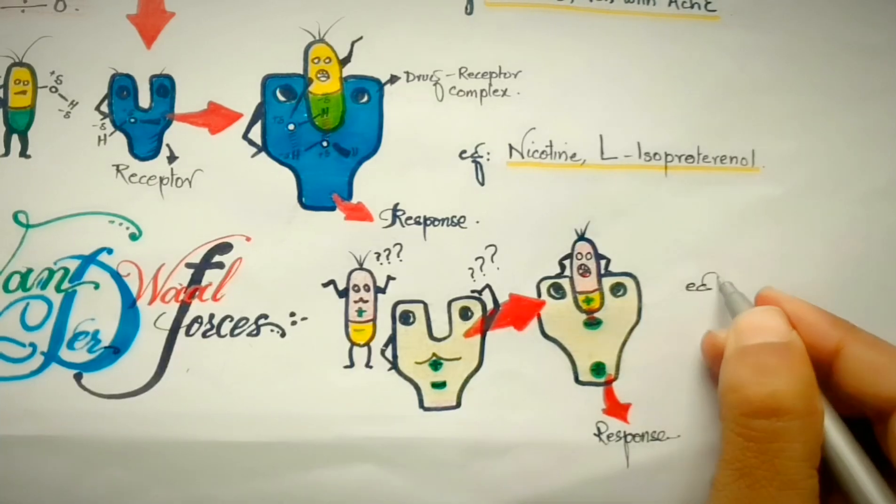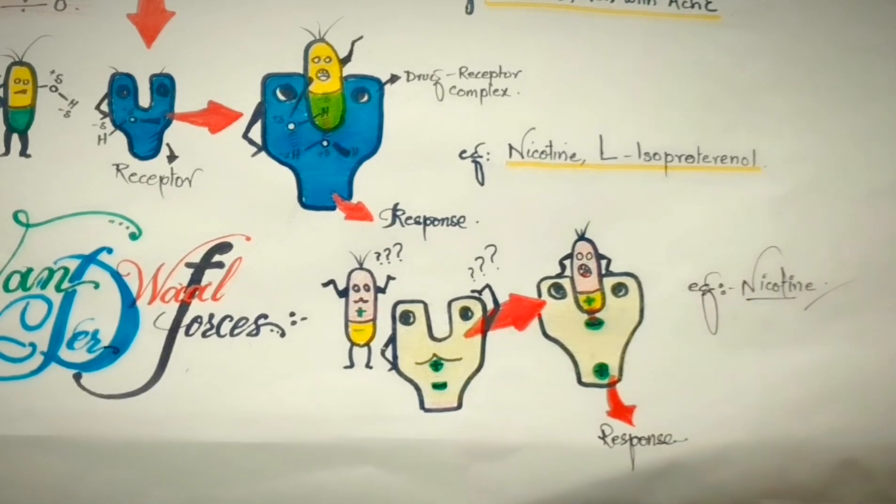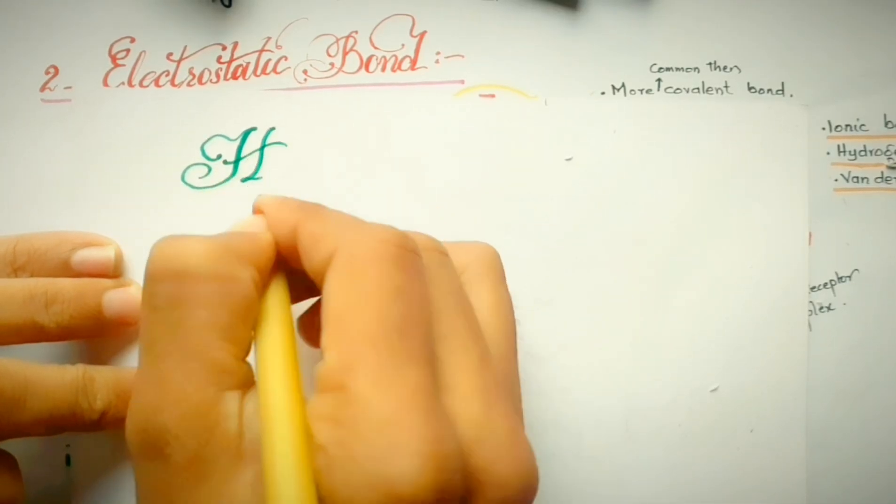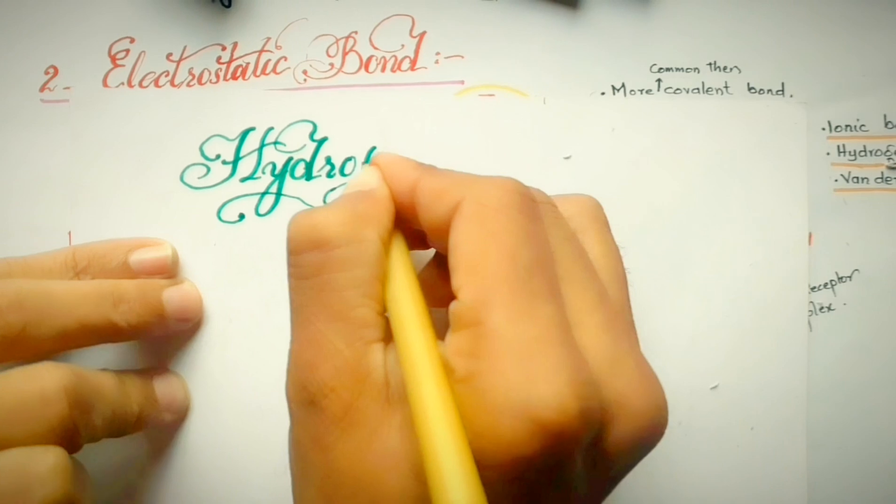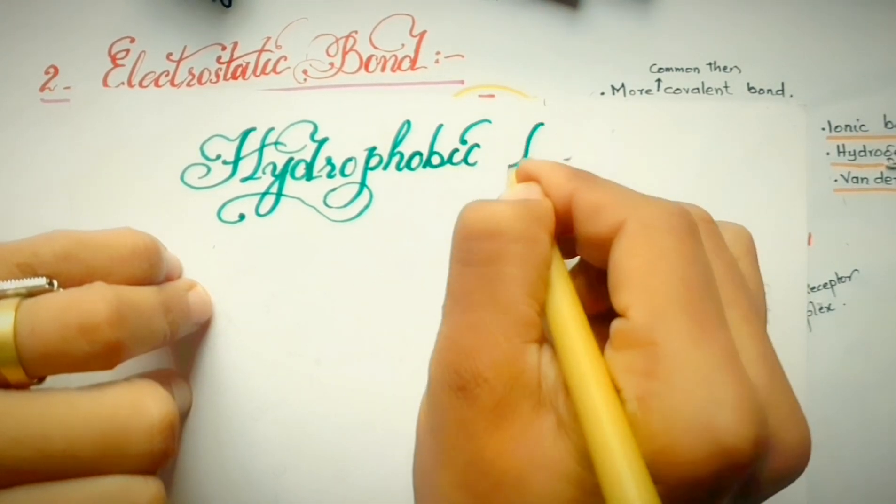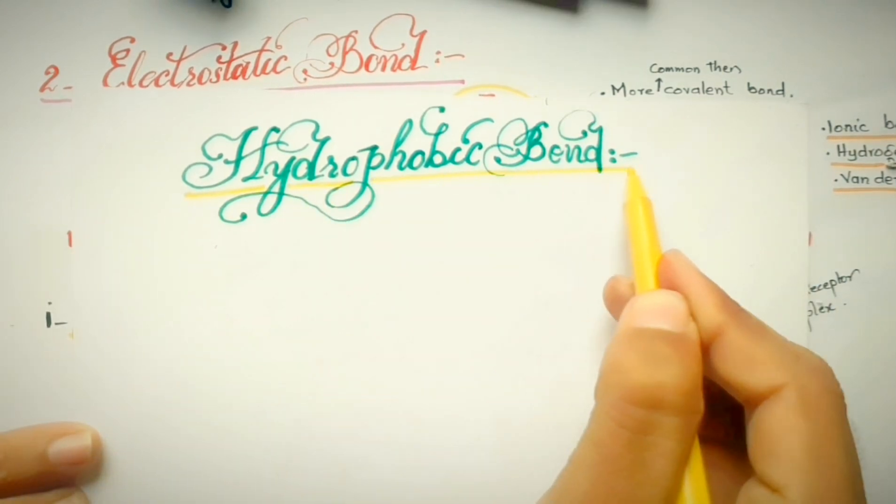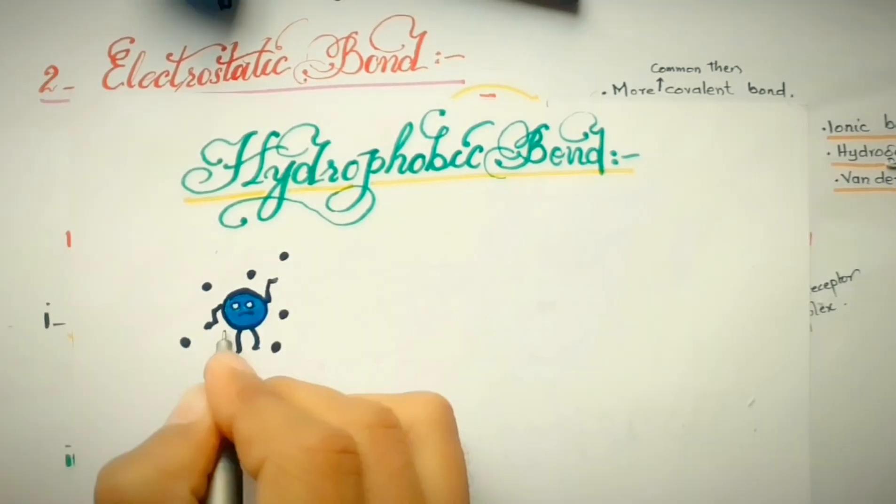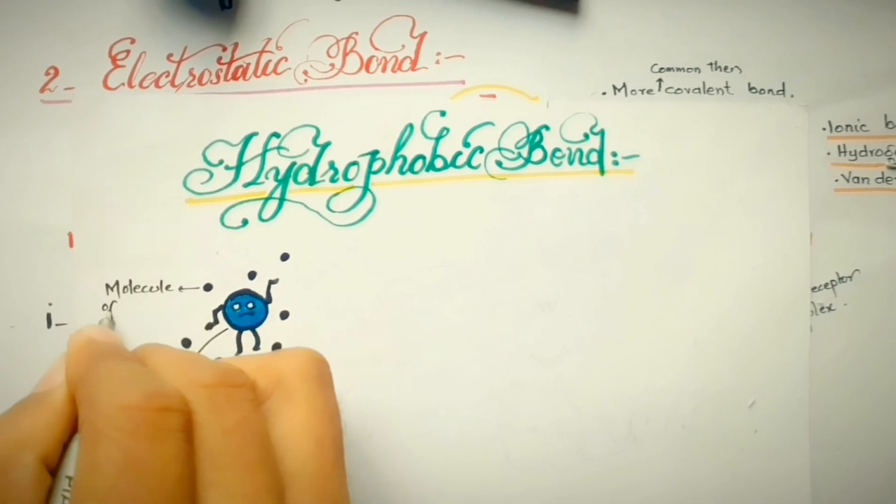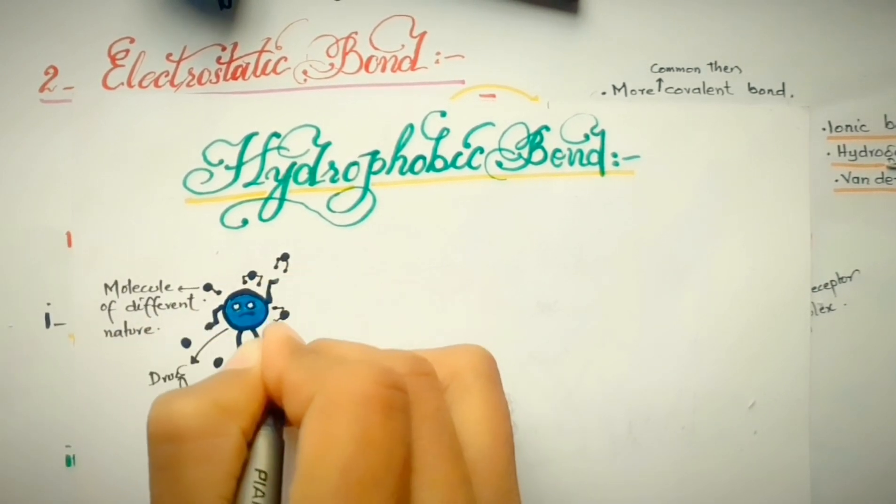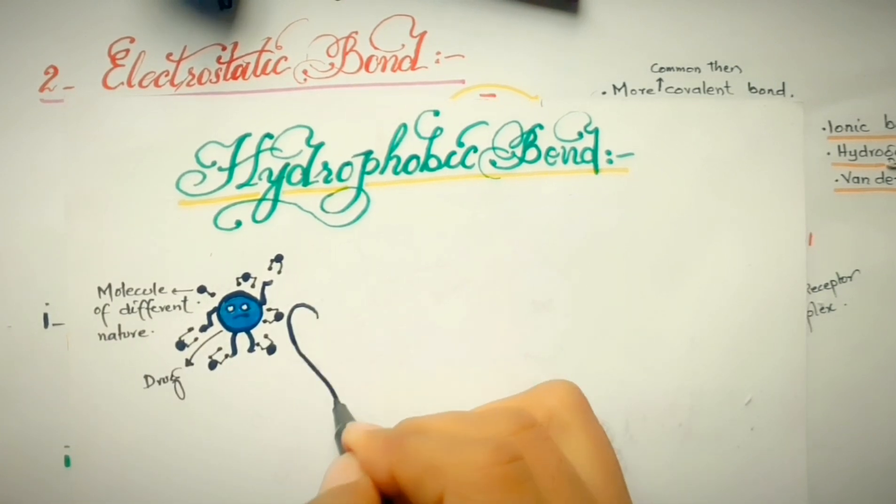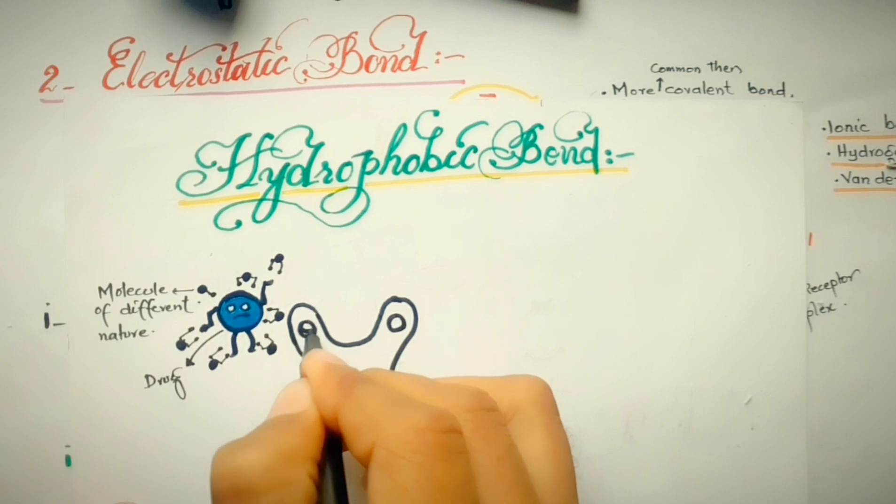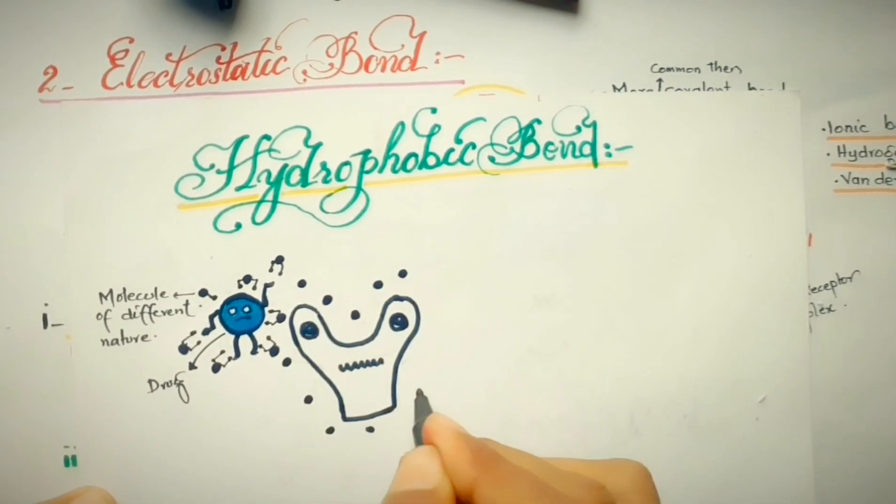For example, nicotine, which also forms these types of bonds with its receptor. As we discussed before, a single drug can form more than one bond with the receptor to activate it. The last type of bond in this discussion which drugs form with the receptors are hydrophobic bonds. These types of bonds are mostly formed by the drugs which form a complex with the intracellular receptors, in which the chemical nature of the drug and receptors are different than the surrounded medium because the surrounded medium has a polar nature while the drug and receptor have a non-polar nature.